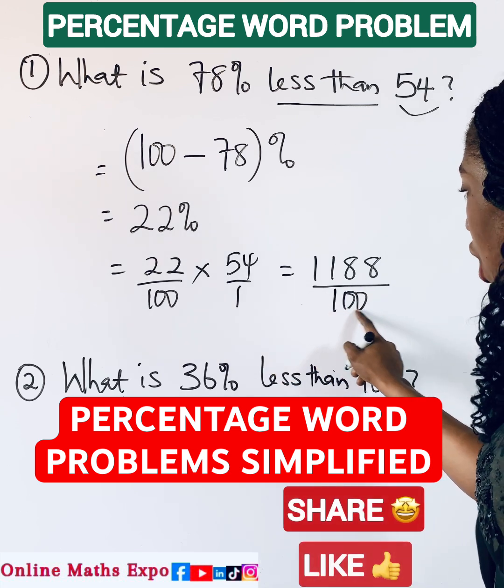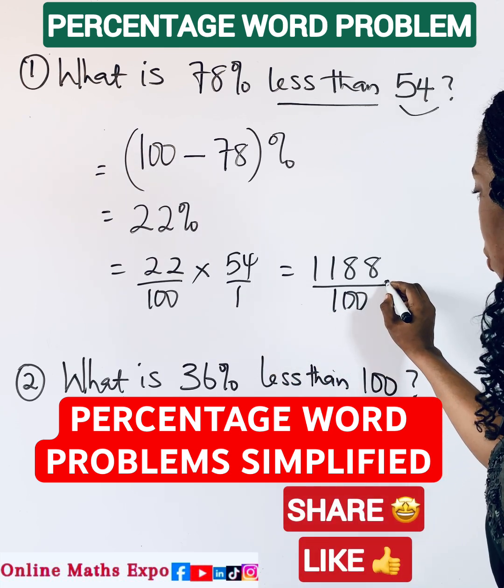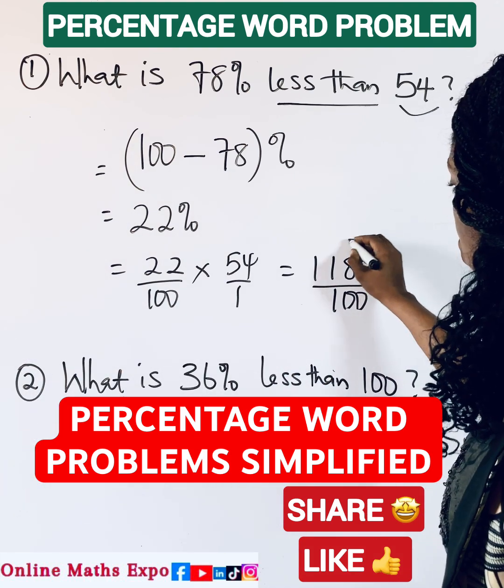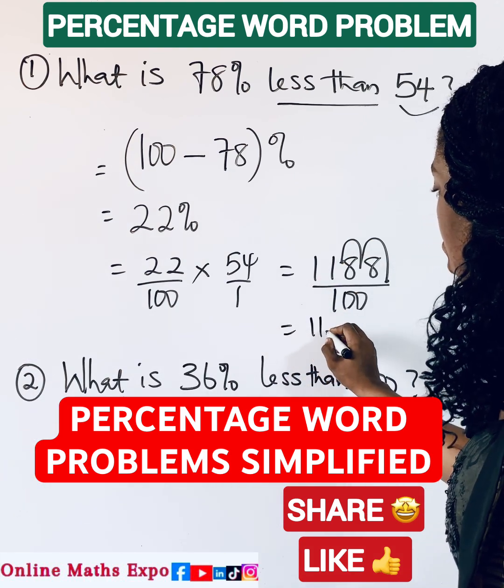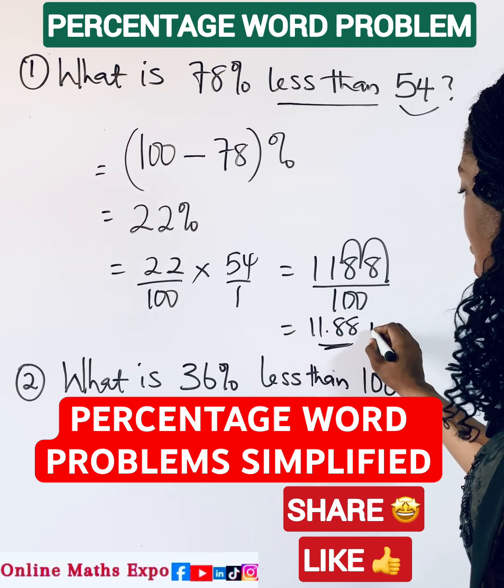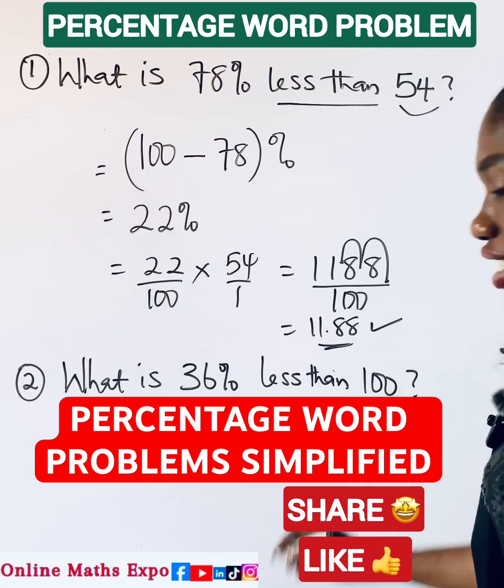You are dividing by 100. You move two places from here to the left side - one, two - and that gives us 11.88 as an answer. What do you think about this? Let me know.